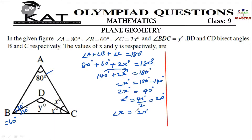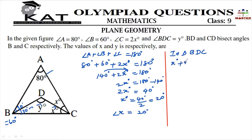Now we have to find angle Y. We consider triangle BDC. Using the angle sum property of a triangle, the three angles — 30 degrees, y degrees, and x degrees — must add up to 180 degrees. So, x degrees plus y degrees plus 30 degrees is equal to 180 degrees.